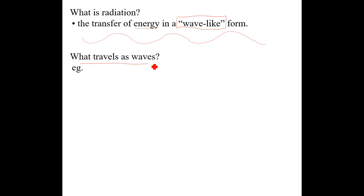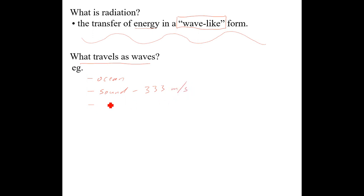There are other familiar things that travel in the form of a wave. If you think about waves in an ocean, those are waves. Sound waves travel at about 333 meters per second. Seismic waves — if there is an earthquake or a volcano — can be measured and they might travel at between 10 and 15 kilometers per second.